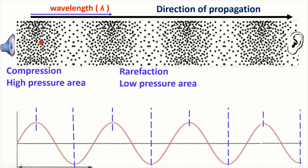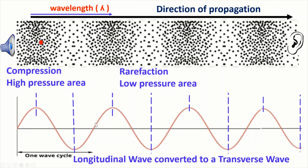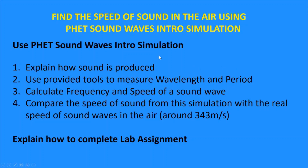So we are going to translate to a transverse wave because it's easier to observe the features of a wave: the period, amplitude, wavelength, and frequency. In this lesson, I use the PHET sound wave intro simulation to explain how sound is produced. I use the provided tools in the simulation to measure wavelength and period. I will calculate frequency and speed of a sound wave, and I will compare the speed of sound from this simulation with the real speed of sound waves in the air, which is approximately 343 meters per second.